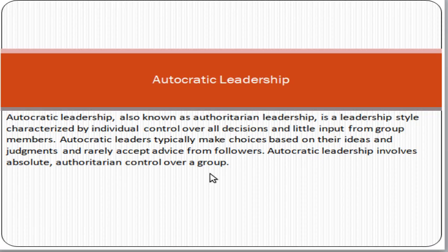For example, an army officer leading a team is a very general example of autocratic leadership style, where one person is taking all the decisions and others are following. Similarly, in an office, one boss takes all the decisions and all employees follow him. In this type of leadership style, there is no input from the followers — all decision making is made by the autocratic leader.